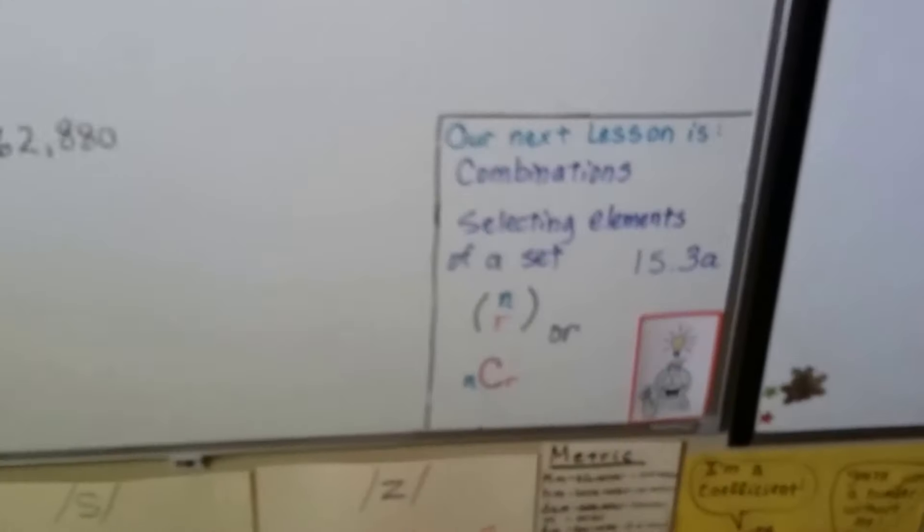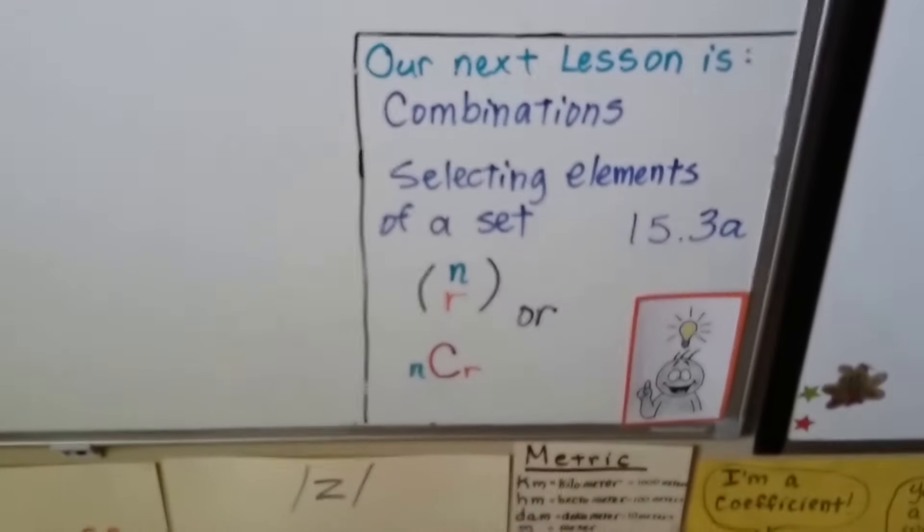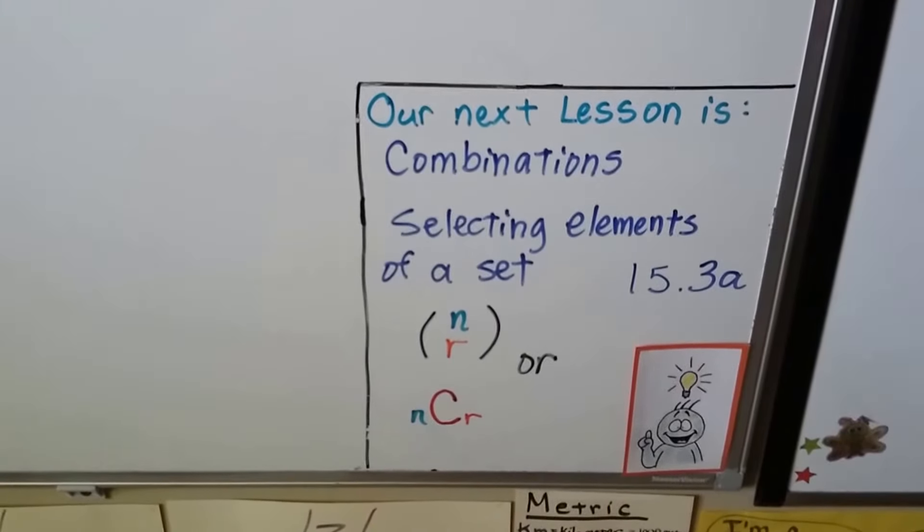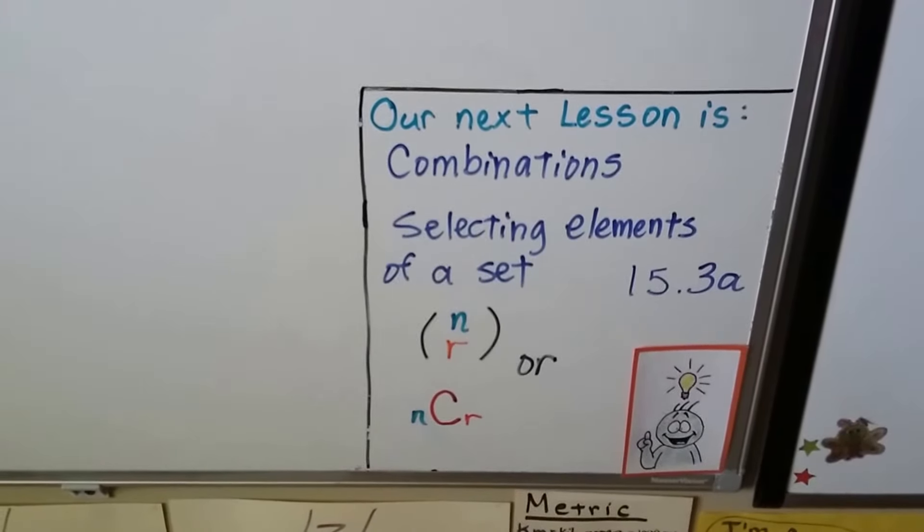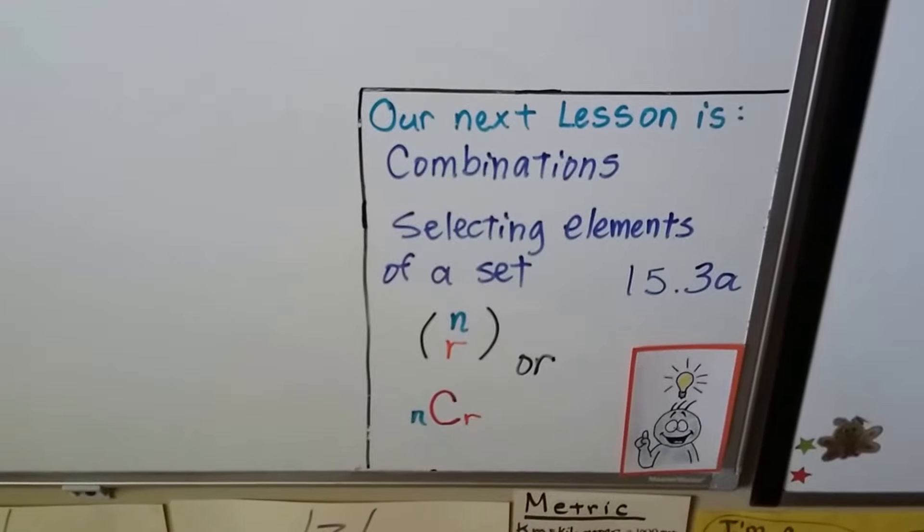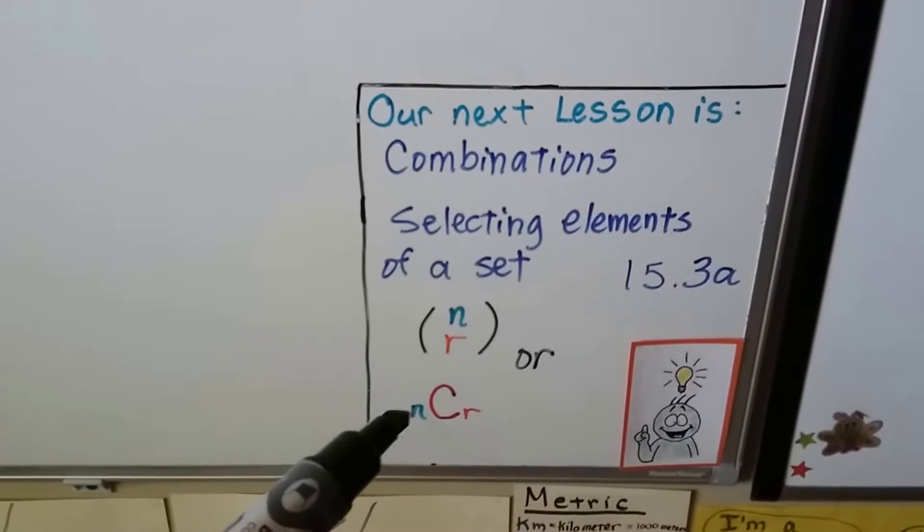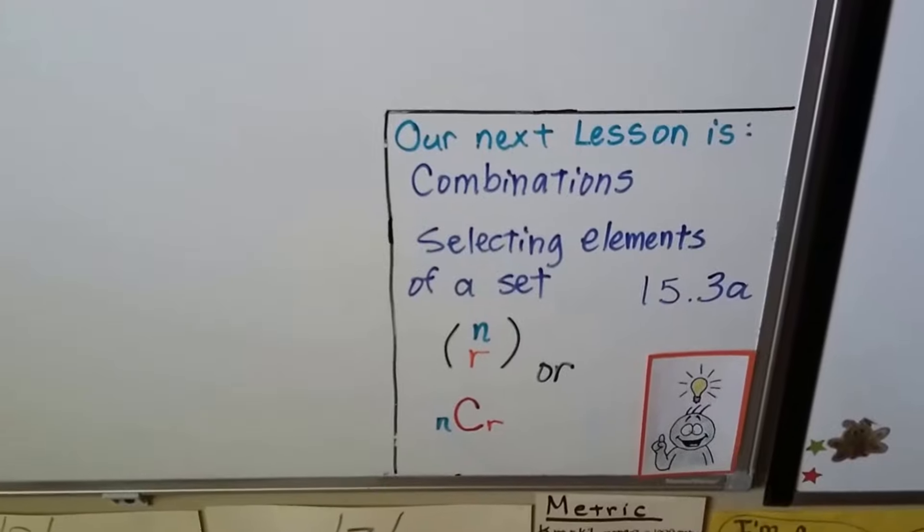Our next lesson is combinations. We're going to be selecting elements of a set, combinations of n objects taken r at a time. We can also write it as nCr, which can be read as n choose r.